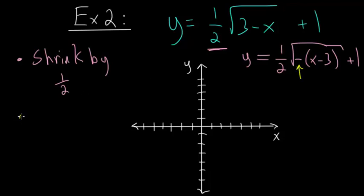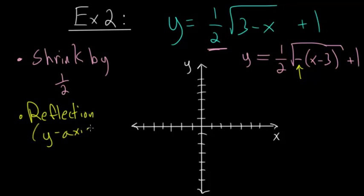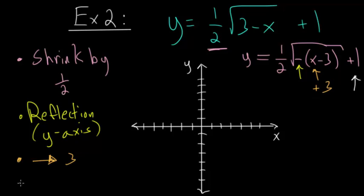The negative inside the square root is a reflection — since we're dealing with x values, it reflects about the y-axis, making all x values opposite. For x minus 3, I ask which x value makes that expression equal 0: it's positive 3, so we shift right 3 units. The plus 1 on the outside shifts all y values up 1 unit.